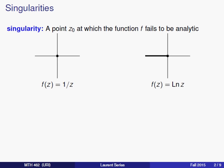Earlier we defined a singularity in terms of a function f. A singularity is a point at which that function fails to be analytic. So if we take as our example the function f(z) = 1/z, we'll see that since the function is not analytic at 0, 0 is a singularity.